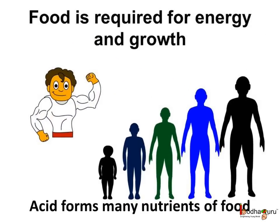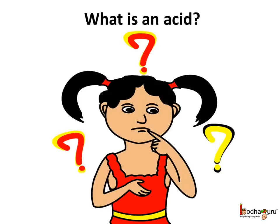But while thinking of acid as bad, we must also know our muscles are made of proteins, which are made of an acid — amino acid. Even many nutrients necessary for our growth and nutrition, like vitamins and fat, are made of acid. So acid helps us in our growth and nutrition. Acids are very important, though certain acids are very harmful.